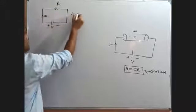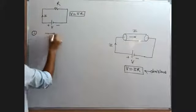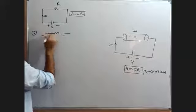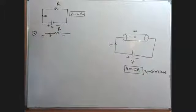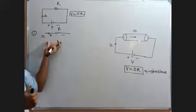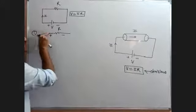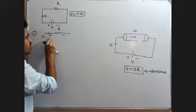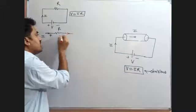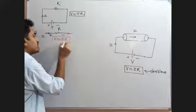Some points we have to remember about the flow of current. First point: if current is entering at a terminal, that terminal of the resistance will become positively charged. If current is leaving from a terminal, that terminal will become negatively charged. Then the potential difference across this resistance is equal to IR. This concept you have to understand clearly.